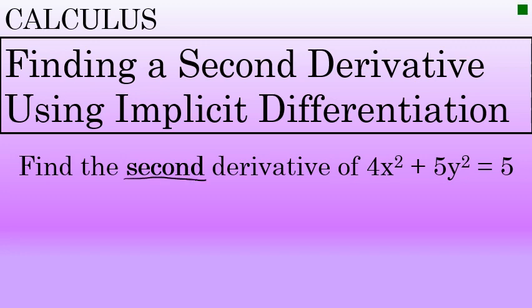To find the second derivative of 4x squared plus 5y squared equals 5, an implicit equation, you need to know two things: the basics of implicit differentiation and the quotient rule. Let's begin.